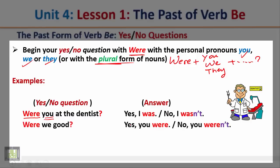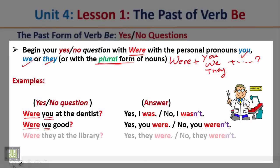'Were we good?' We start with the verb 'were.' The answer: yes, you were, or no, you weren't. 'Were they at the library?' We start with the verb, then put the subject. The answer: yes, they were, or no, they weren't.